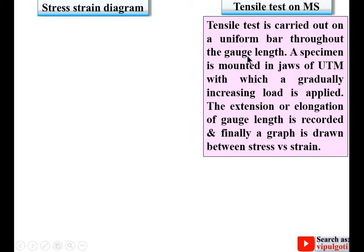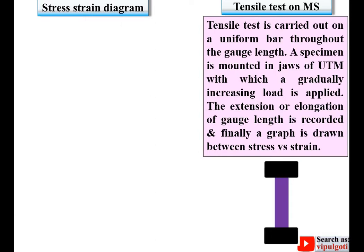Initially a specimen is prepared with the gauge length, and then on the UTM — that means Universal Testing Machine — a gradually increasing load is applied. Each time the extension or elongation is recorded, and finally a graph is prepared between stress versus strain, which is called the stress-strain diagram, sometimes also called the stress-strain curve.